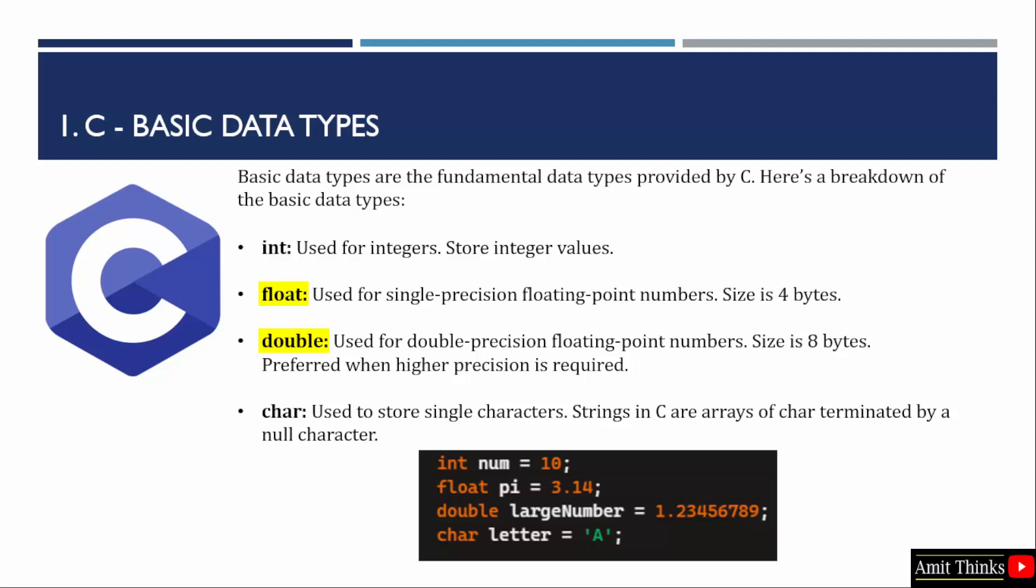The size of float is 4 bytes whereas the size of double data type is 8 bytes. Float is suitable for applications where memory is constrained and the precision requirement is moderate. Whereas double is preferred when higher precision is required. The memory usage of float is less than what double uses. Here is an example below. Using float and double we have initialized two variables: float pi and double large number.